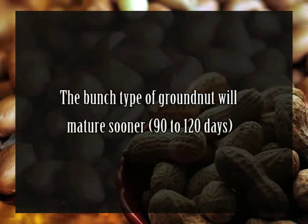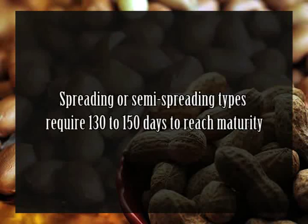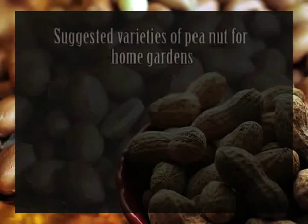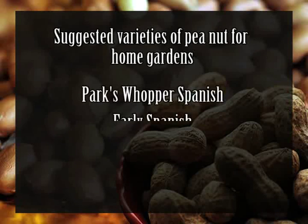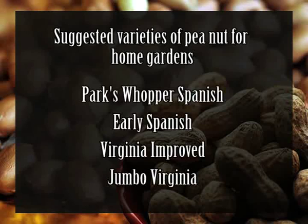The crop is generally cultivated in rotation with wheat, sorghum, bajra, cotton, peas, chilies, and onions. The selection of groundnut variety depends largely on the length and time of the growing season. Bunch types mature sooner in 90 to 120 days, whereas spreading or semi-spreading types require 130 to 150 days. Suggested varieties for home gardens include Parker Swooper Spanish, Early Spanish, Virginia Improved, and Jumbo Virginia. Parker Swooper has large seeds, Spanish is an early variety with small seeds, and Jumbo Virginia has short pods with large seeds.